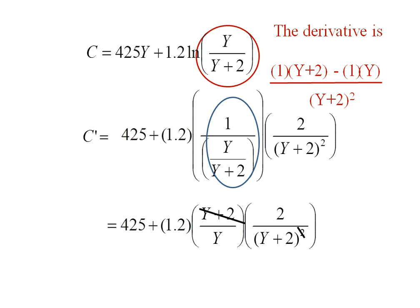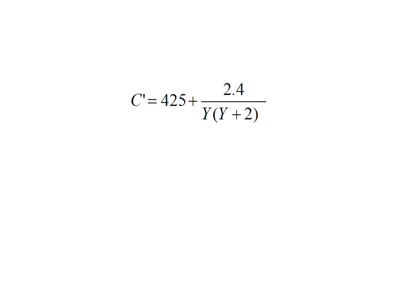Noticing now I've got a y plus 2 in the numerator and a y plus 2 squared in the denominator, one of those can cancel out. The final thing I can do is take this 1.2 and multiply it by 2. So in the end, the first derivative of this expression is 425 plus 2.4 divided by y times y plus 2.